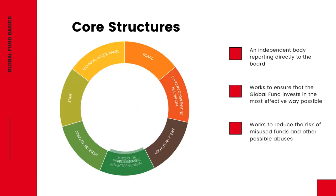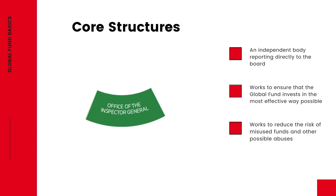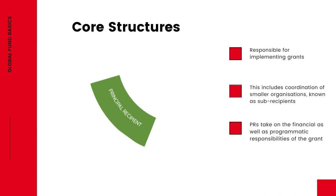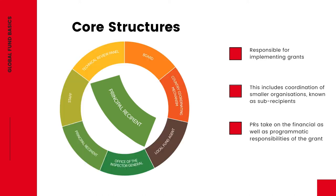Then there is the Office of the Inspector General, or OIG — an independent body reporting directly to the Global Fund Board. The OIG works to ensure that the Global Fund invests in the most effective way possible and to reduce the risk of misused funds and other possible abuses, including human rights abuses within Global Fund grants. Then there are the Principal Recipients, or PRs, who are responsible for implementing grants, including coordination of smaller organizations known as sub-recipients or even sub-sub-recipients. Principal Recipients take on the financial as well as programmatic responsibilities of the grant.